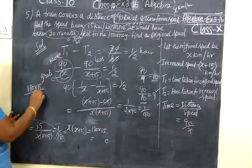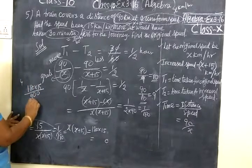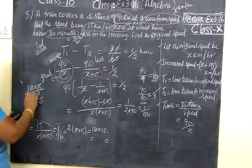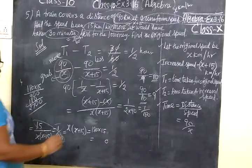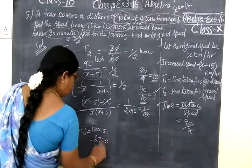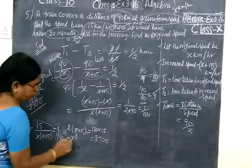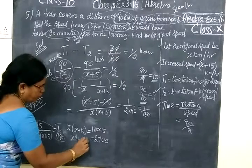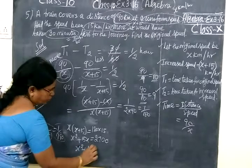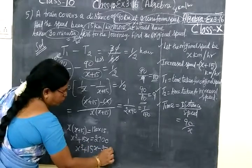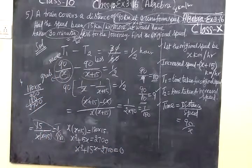So, multiply now. Multiply 180 into 15. 0, 85, 40. Balance 4, 9. 180. 0. 0, 2, 2, 700. So, here you write 2700. Take x inside. So, x square plus 15x equal to this one. So, x square plus 15x minus 2700 is equal to 2700. We check it. So, x square plus 15x minus 2700 equal to 0.